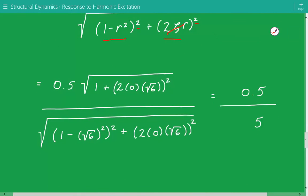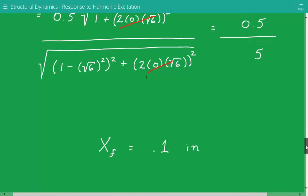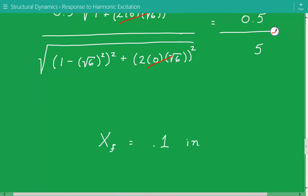So we get it's equal to 0.5 divided by 5, so the amplitude—the steady-state vibration amplitude—is equal to 0.1 inches. And this is the end of this example.